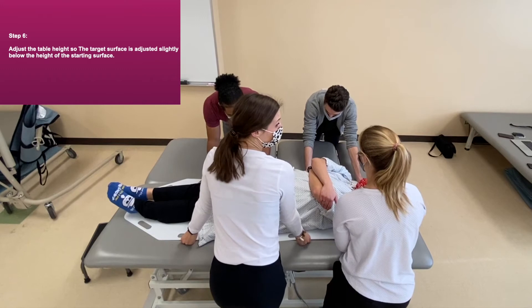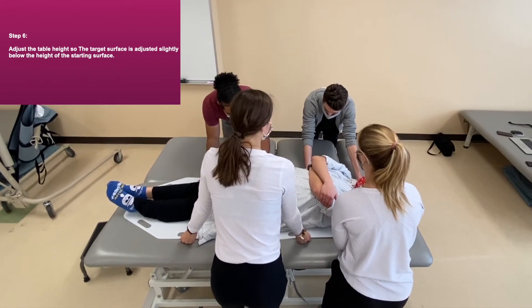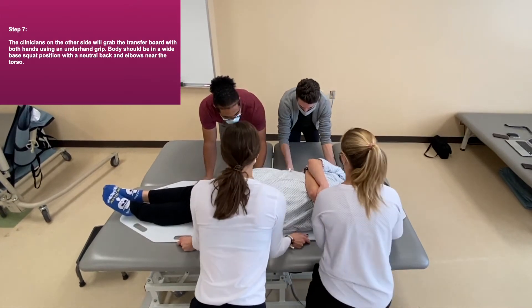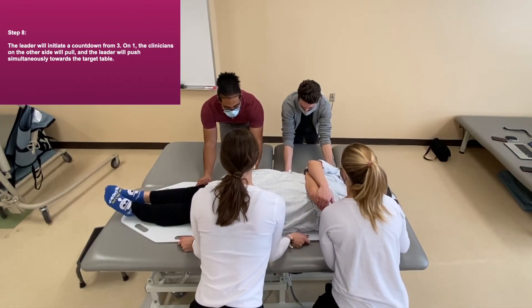Adjust the table height so the target surface is set slightly below the height of the starting surface. The clinicians on the other side will grab the transfer board with both hands using an underhand grip. The body should be in a wide base squat position with a neutral back and elbows near the torso.